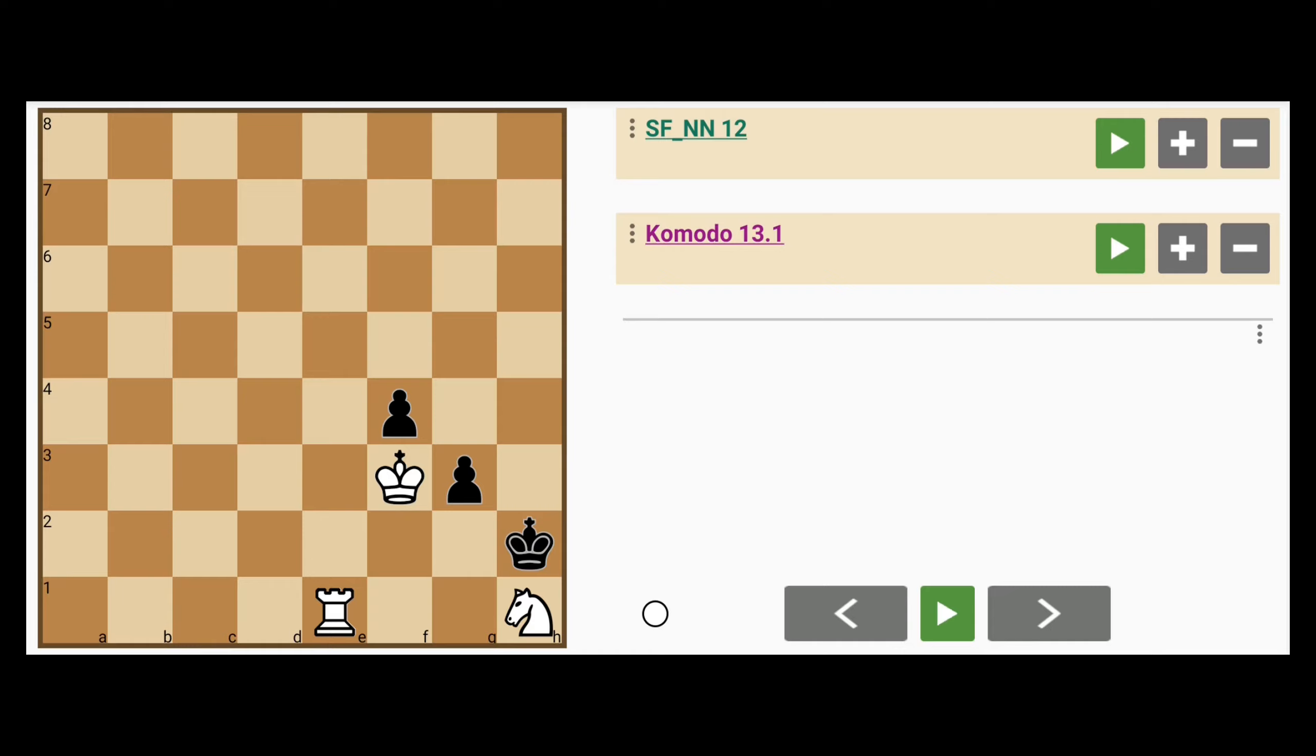Black only has two pawns. White has a rook and knight. So obviously this game is won by white, isn't it?